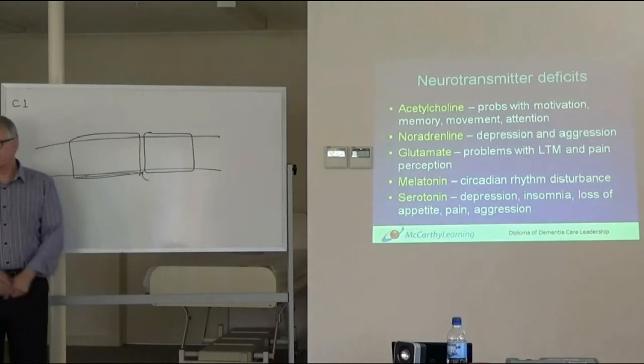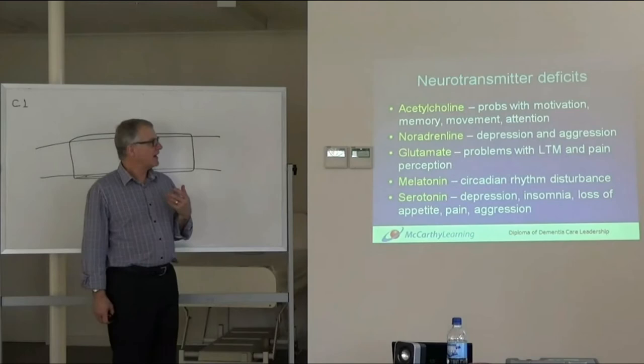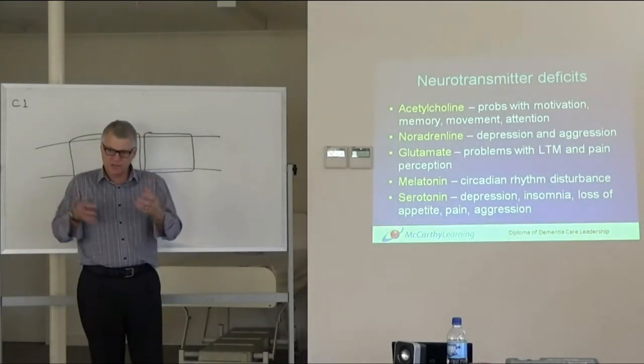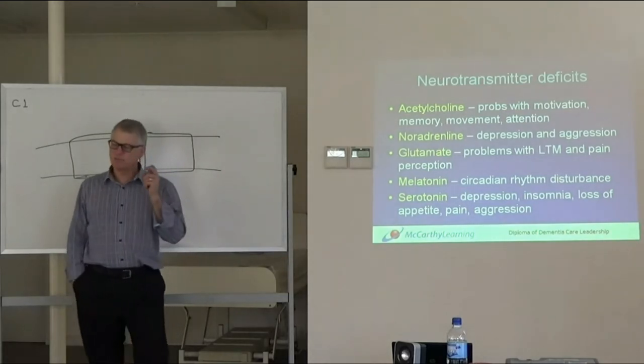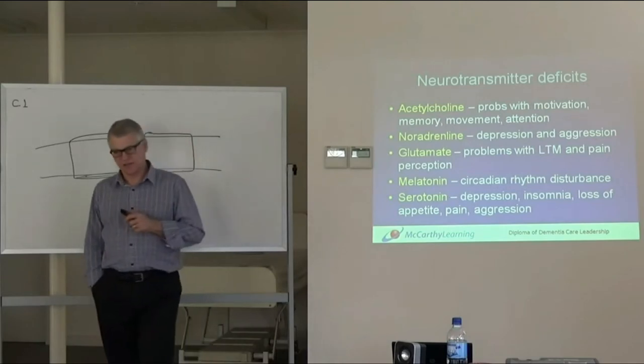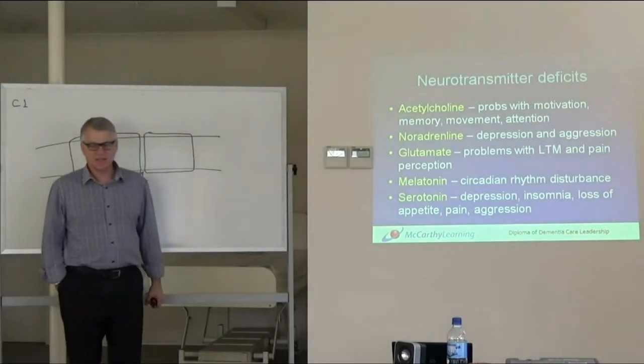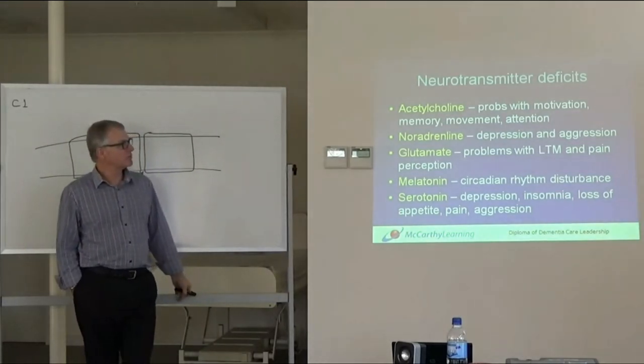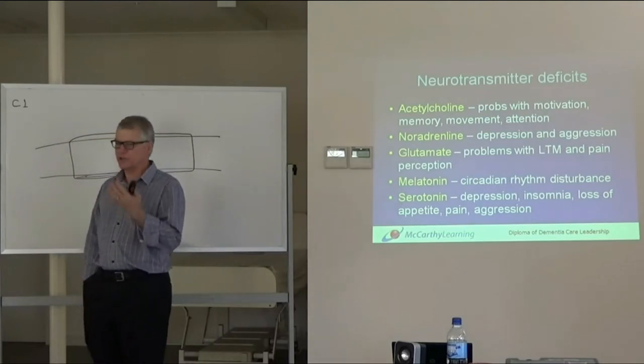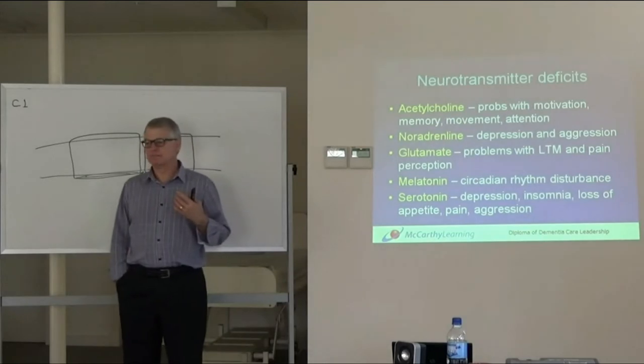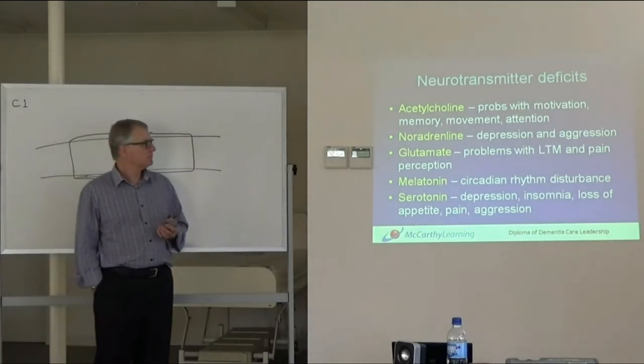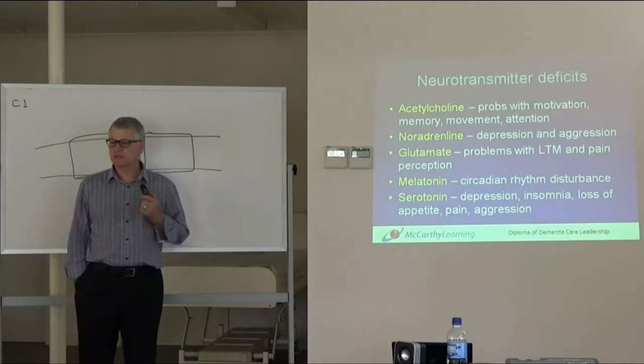The neurotransmitters are important here. These are the chemicals that are in short supply in brains affected by Alzheimer's disease. There's an overall decrease in these vital neurotransmitters. The most important one, because it's most affected by Alzheimer's disease, is acetylcholine. If acetylcholine is in smaller quantities than it should be, you'll have problems with motivation, memory, movement, and attention. It affects mood, depression, and if it's movement, your Parkinson's symptoms will be worse. Acetylcholine is a very important neurotransmitter.